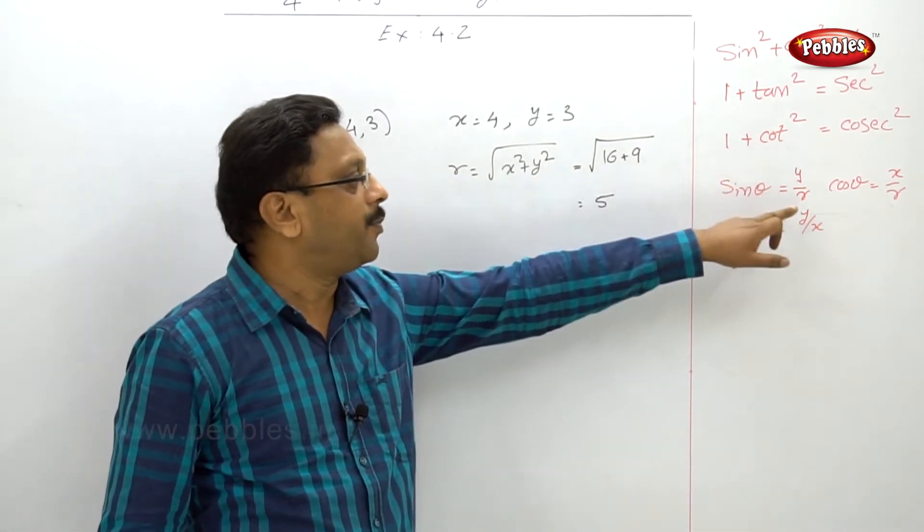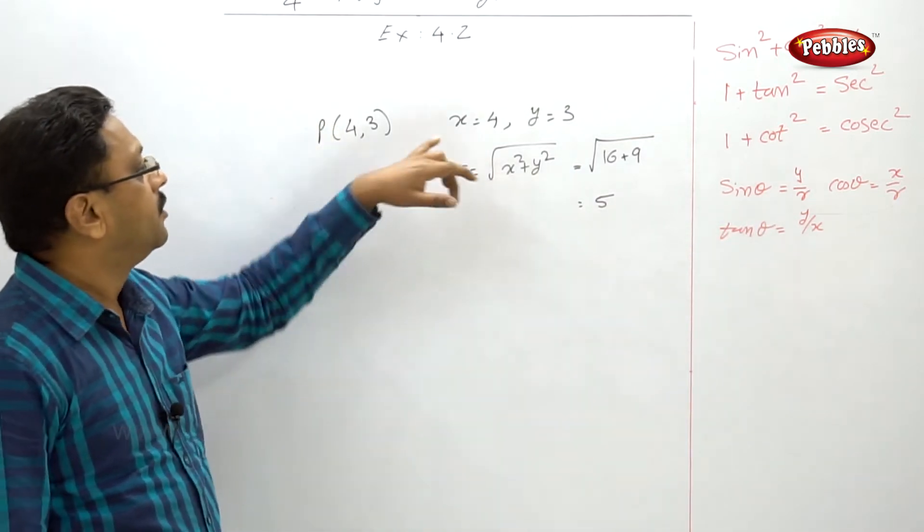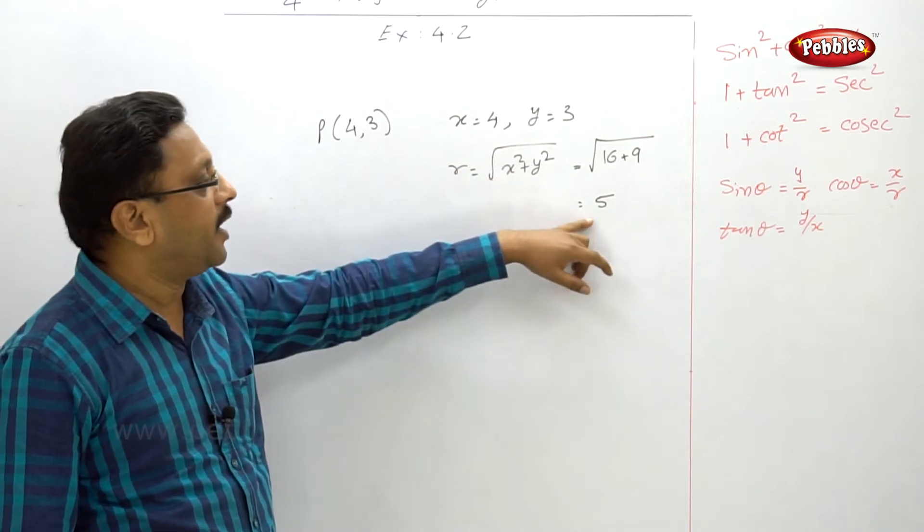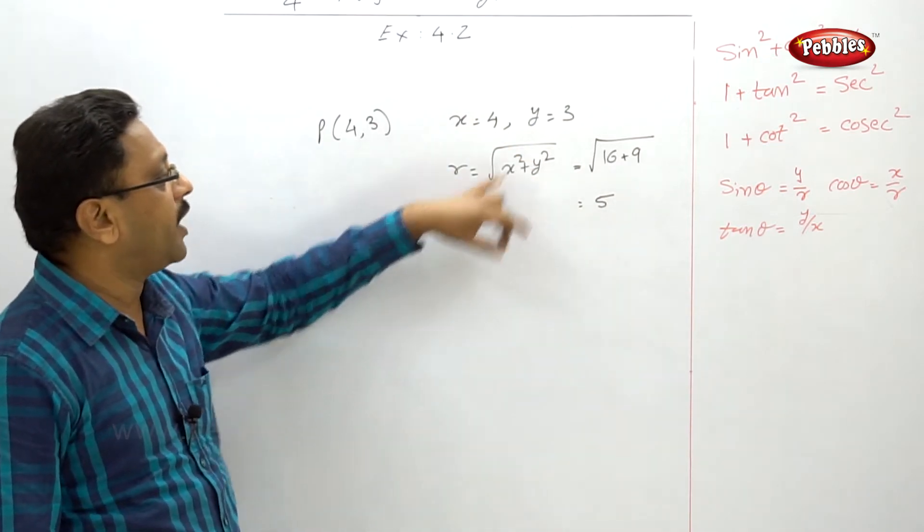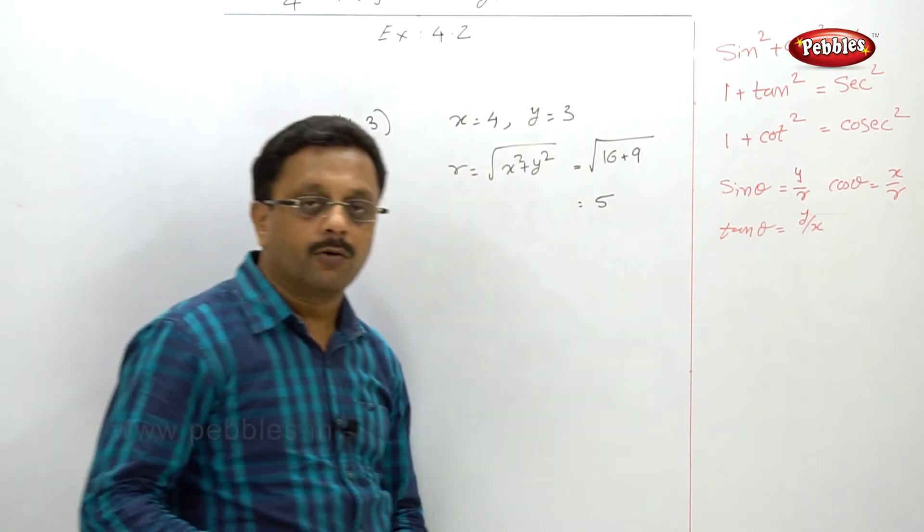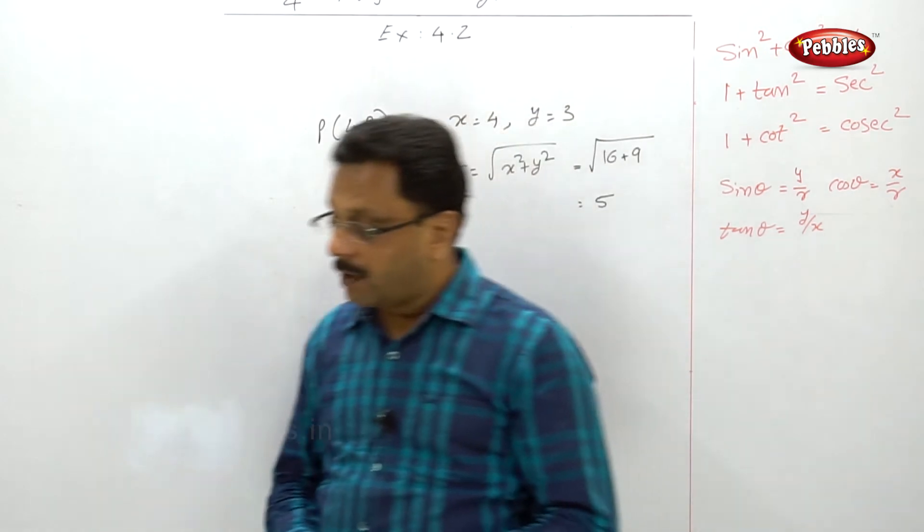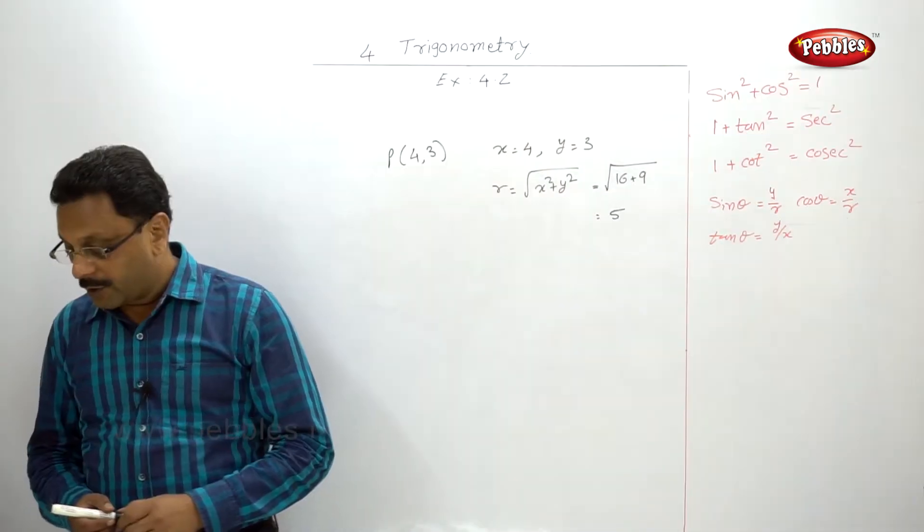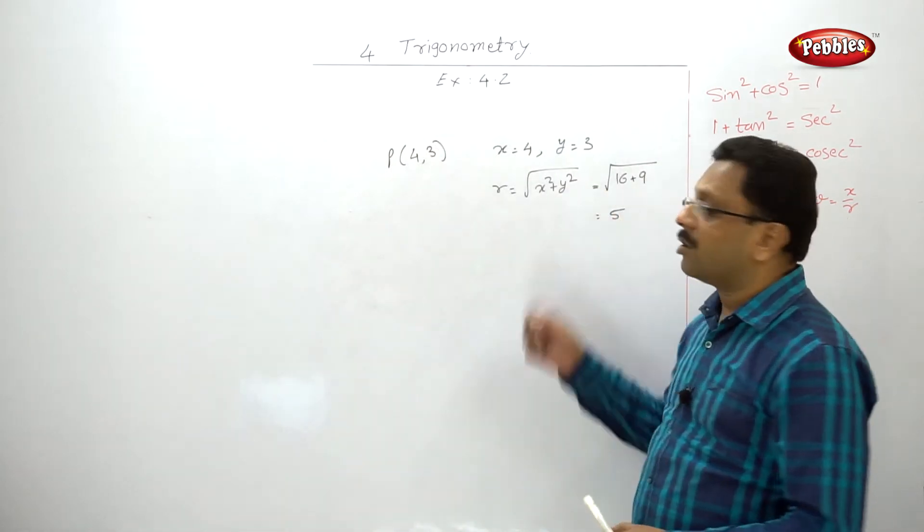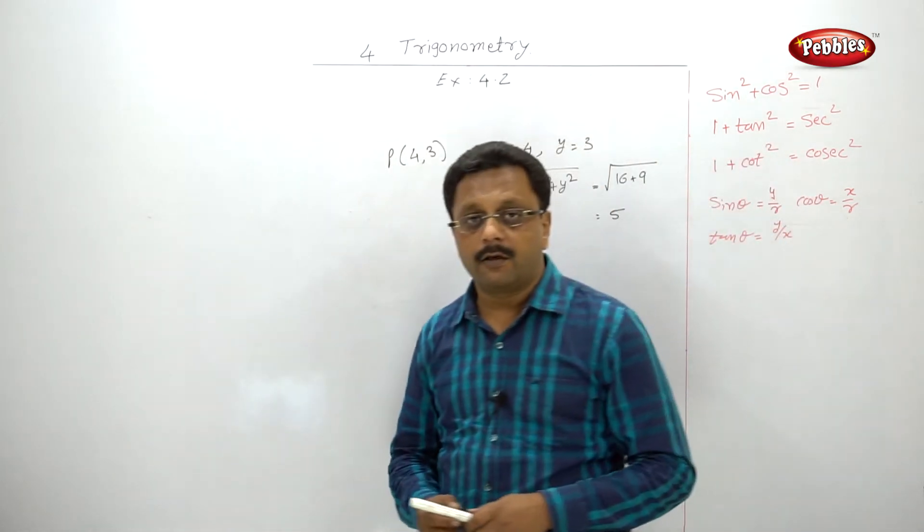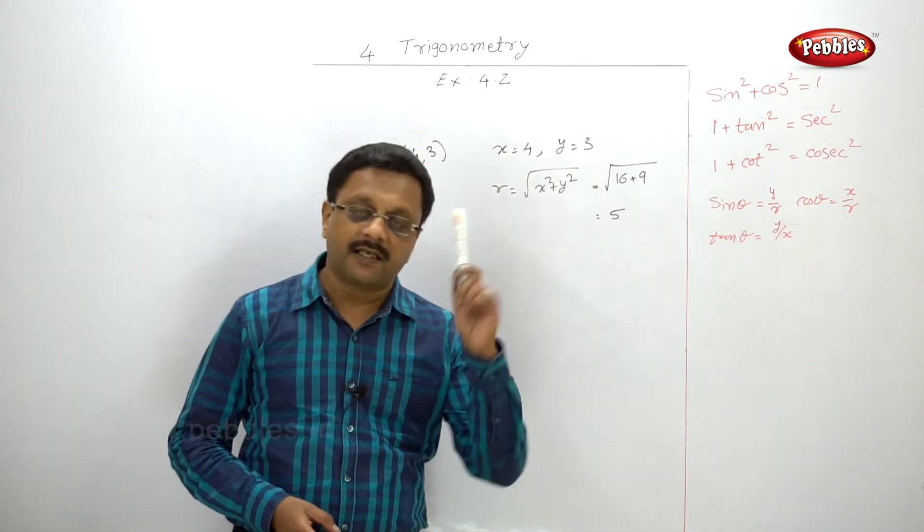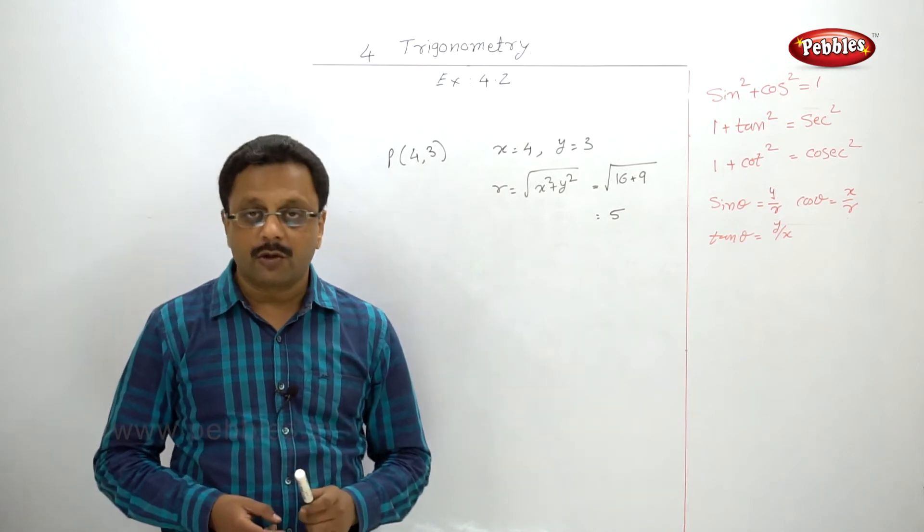From this you can easily find out the value of sin θ = y/r = 3/5, cos θ = x/r = 4/5, and tan = y/x = 3/4. You have to write the answers properly. They have asked for trigonometric ratios, so you have to write not only sin, cos, and tan, but also cosec, sec, and cot. All six trigonometric ratios you have to write.